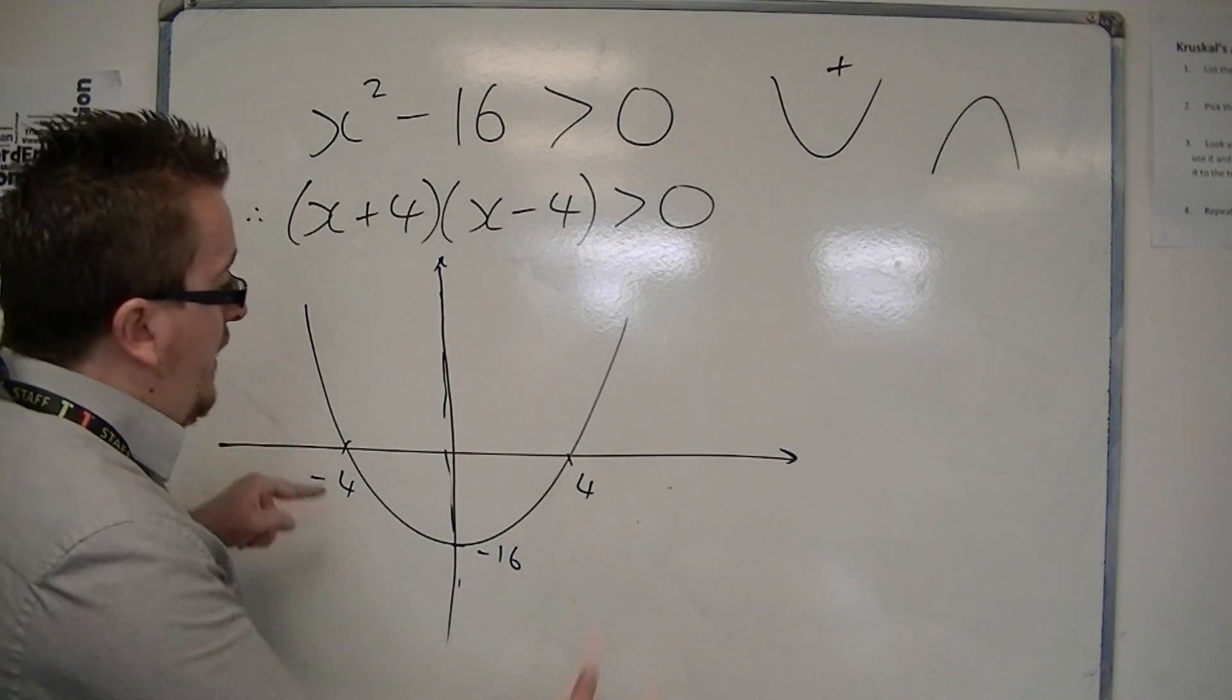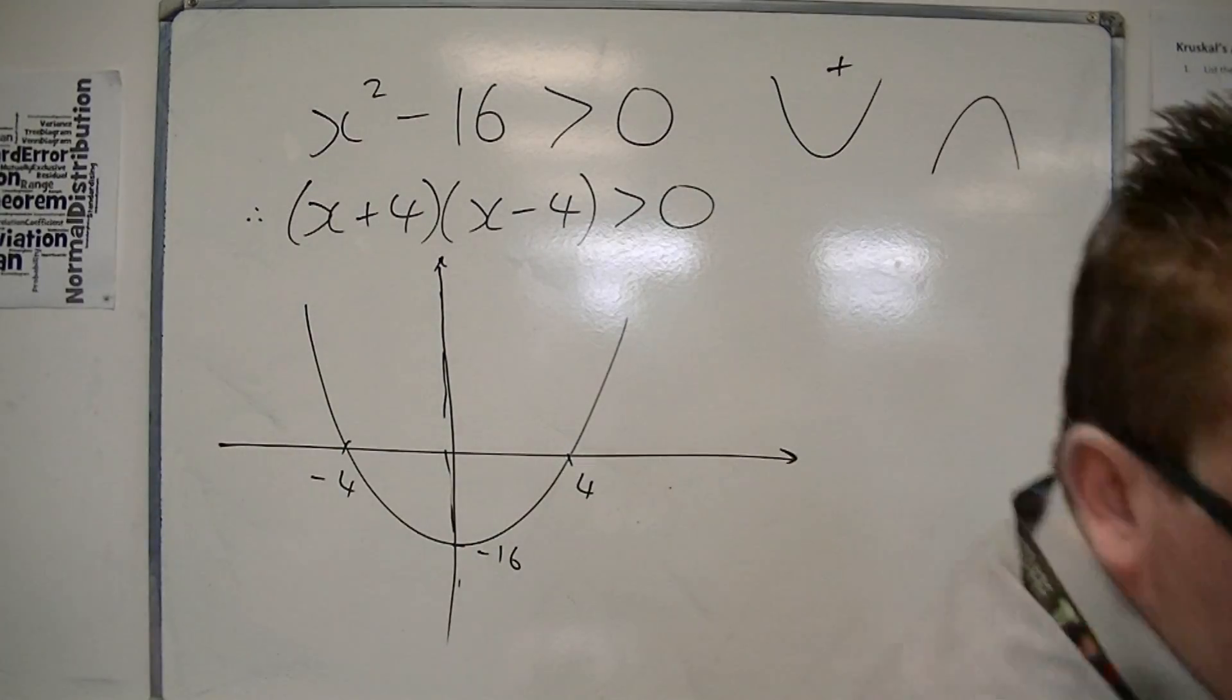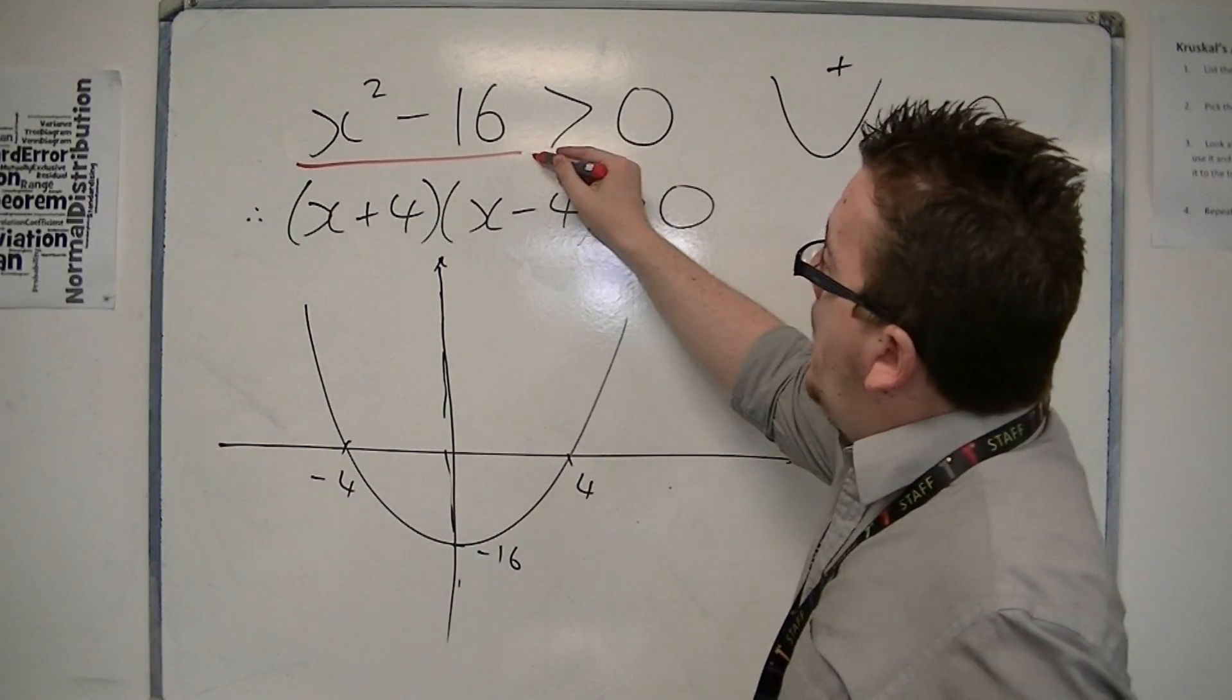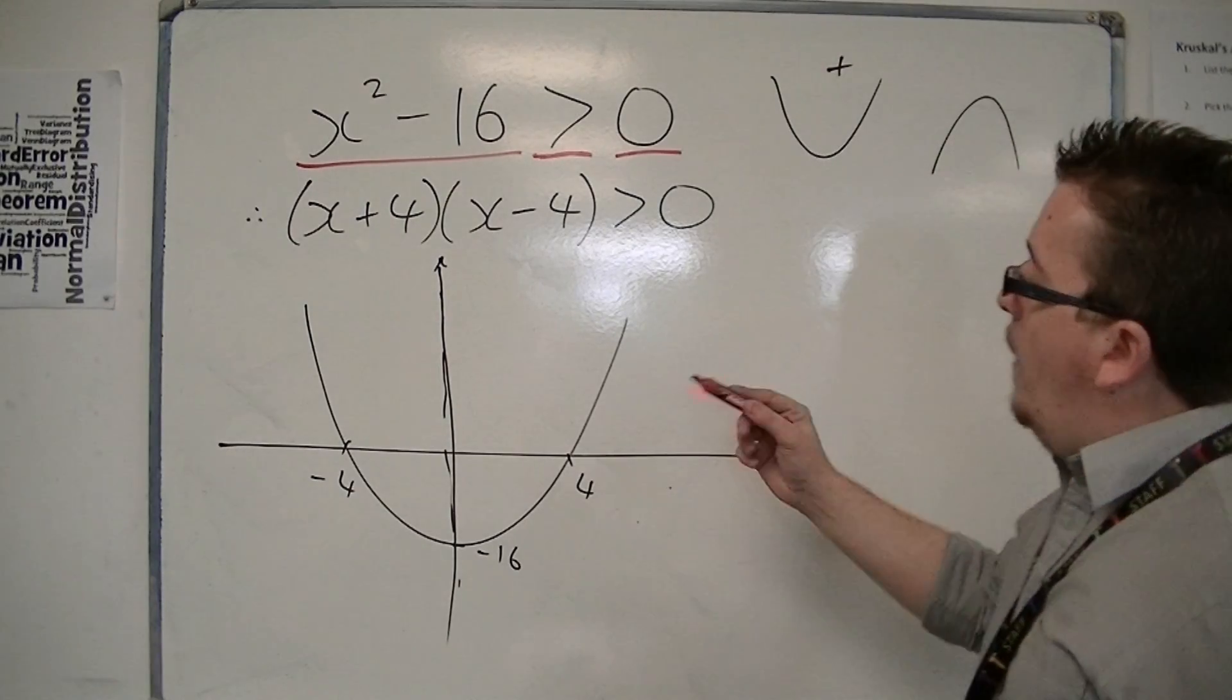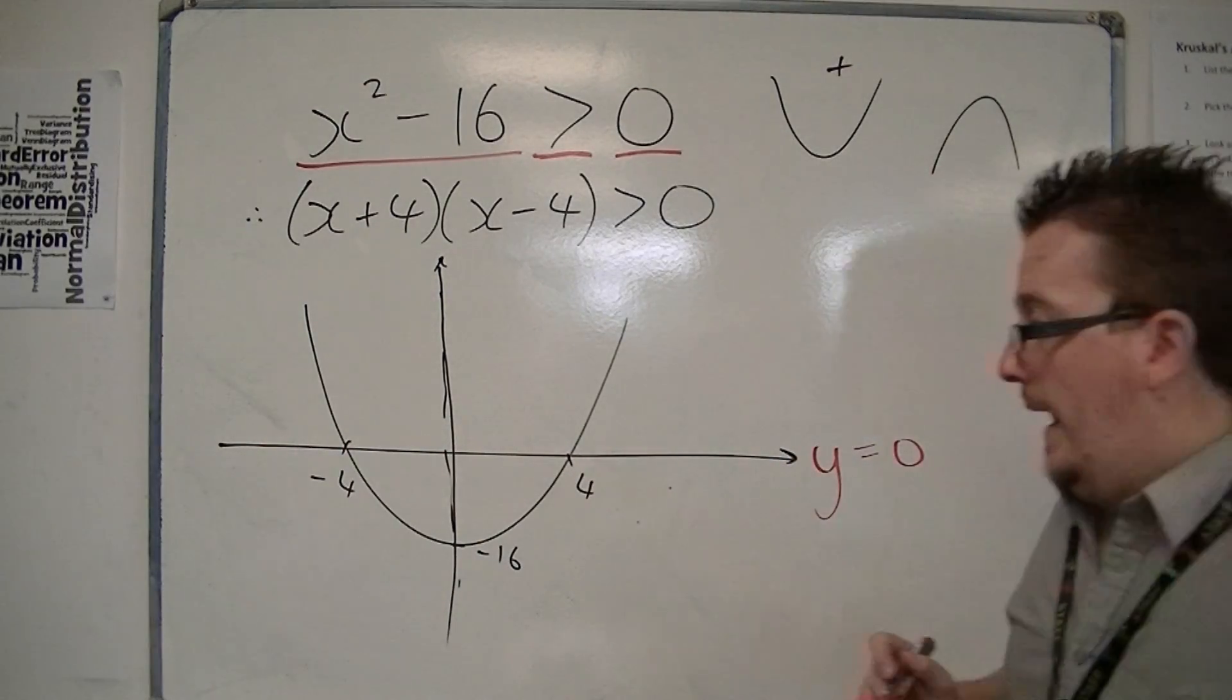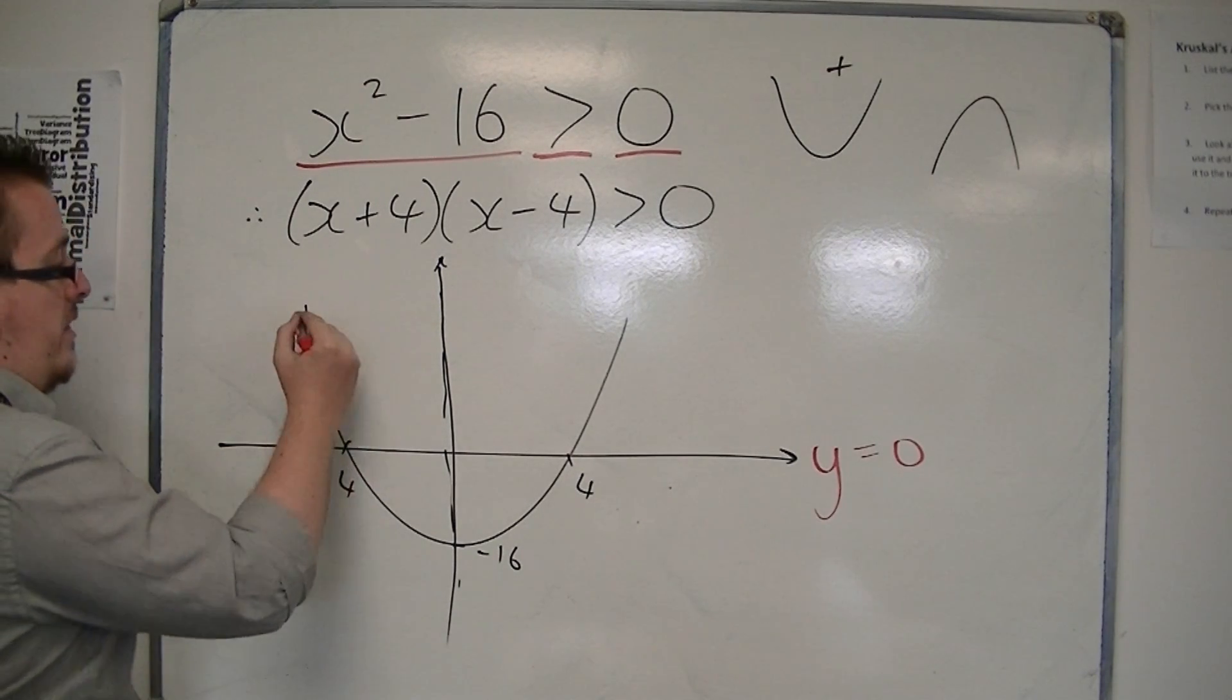So, this is what it would look like, and what you need to ask yourself, based on that inequality, is where is the parabola above y equals 0. Where is it above this line. And it's above it here. You can see that the curve is above the x-axis there.